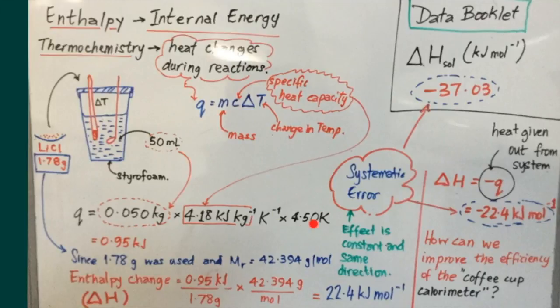Taking the product of these three values, the answer comes to 0.95 kilojoules. And this is the absolute enthalpy change for this reaction involving 1.78 grams of lithium chloride entering into solution in 50 milliliters of water. But the actual value for the enthalpy change of this salt going into solution must be quoted in kilojoules per mole.